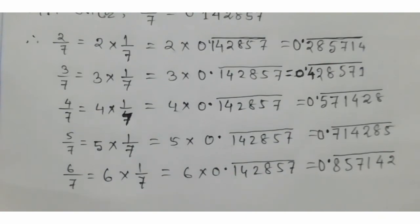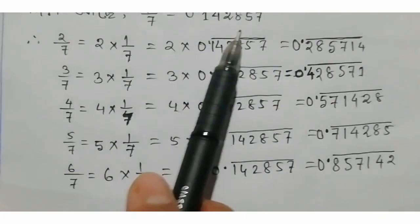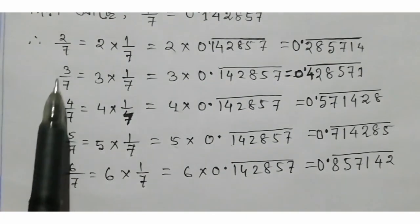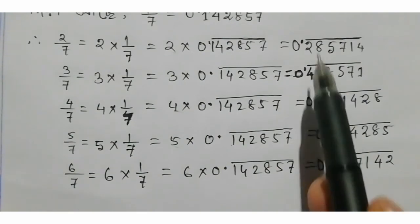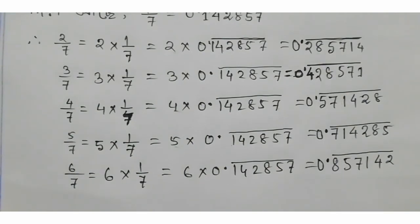1 divided by 7, 2 times 7, 3 times 7, 4 times 7, 5 times 7, 6 times 7. This is the result.